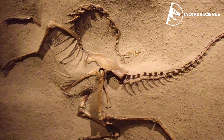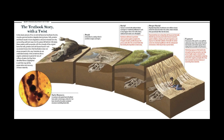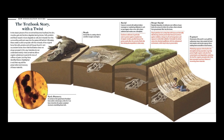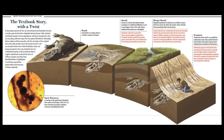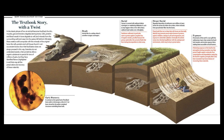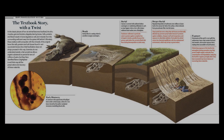The oldest fossils are around 3.48 to 4.1 billion years old. The observation in the 19th century that certain fossils were associated with certain rock strata led to the recognition of a geological timescale and the relative ages of different fossils. The development of radiometric dating techniques in the early 20th century allowed scientists to quantitatively measure the absolute ages of rocks and the fossils they host. There are many processes that lead to fossilization, including permineralization, casts and molds, authigenic mineralization, replacement and recrystallization, adpression, carbonization, and bioimmuration.